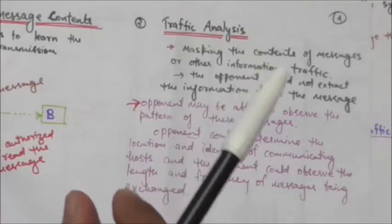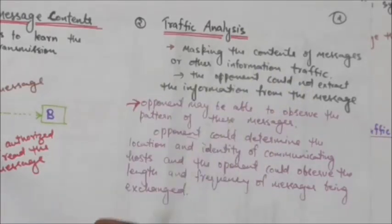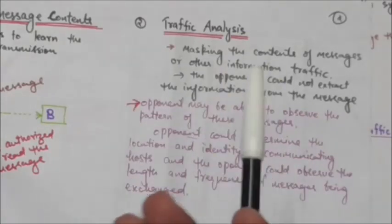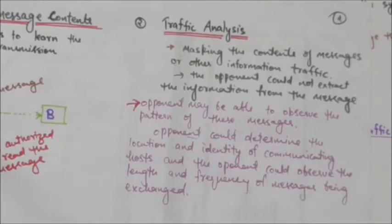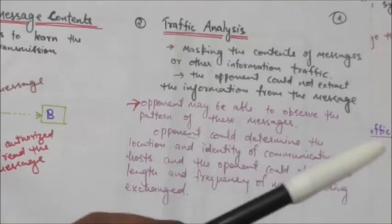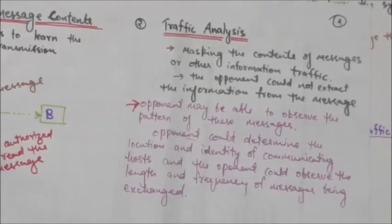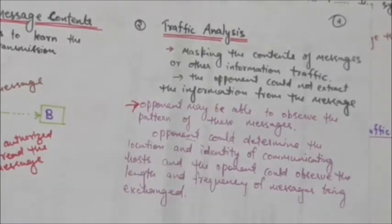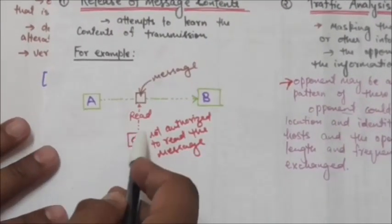The opponent observes the pattern of messages, and by doing so can determine the location and identity of communicating hosts and observe the frequency and length of messages exchanged — information useful in guessing the nature of the communication. Passive attacks are very difficult to detect because they do not involve any change or alteration of data. The message traffic is sent and received in an apparently normal fashion; neither the sender nor the receiver is aware that a third party has read the message or observed the traffic pattern.